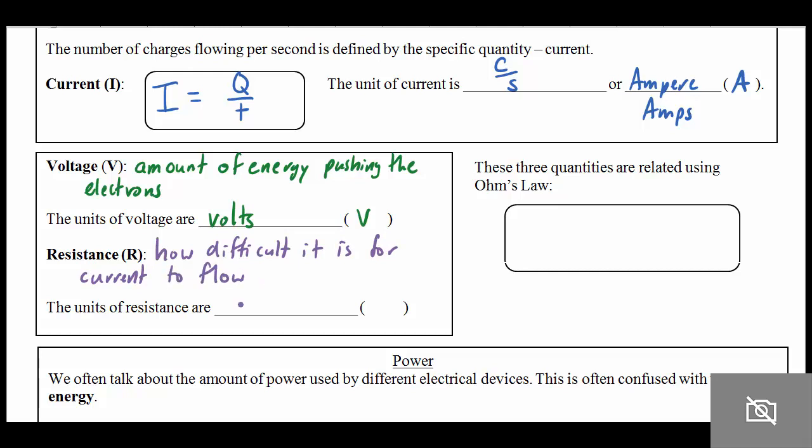And the units for resistance are ohms, and it has this funky symbol that is the Greek letter omega. It kind of looks like a horseshoe.